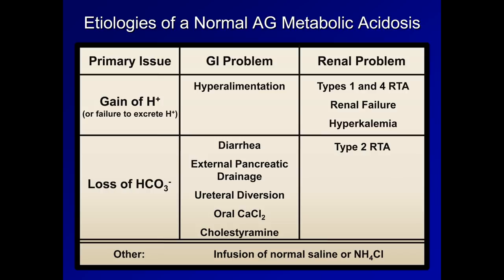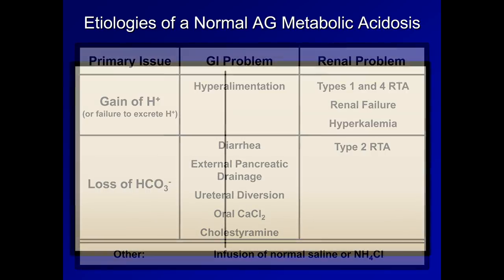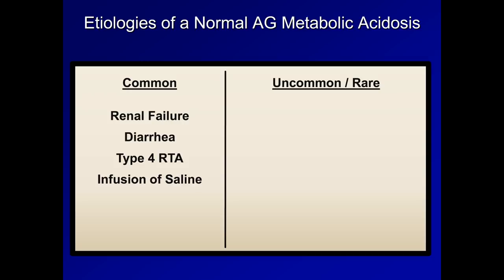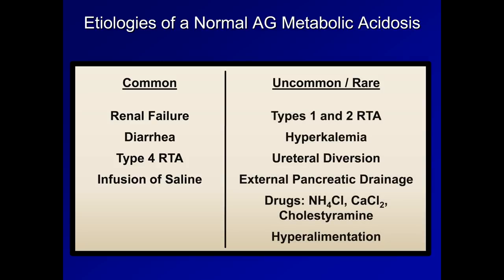Because a number of these conditions are uncommon or esoteric, I actually prefer conceptualizing these etiologies according to a chart, placing them into either common or uncommon causes of a clinically relevant acidosis. In the common list are renal failure, diarrhea, type 4 RTA, and infusion of saline. In the uncommon list is everything else. I will discuss the more important of these etiologies in more detail one at a time, and also review a little of the pathophysiology along the way. This will provide the background needed to understand why these specific etiologies cause normal gap metabolic acidosis and why they present the way they do.